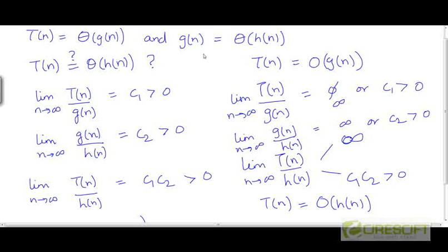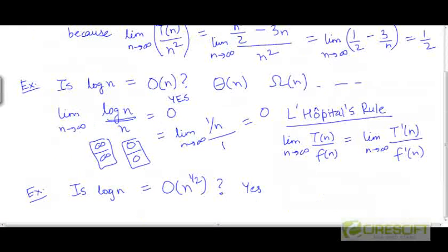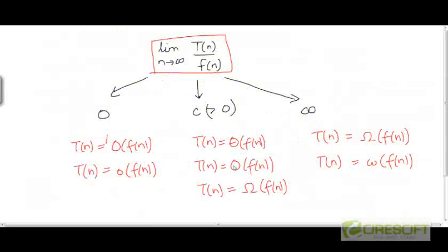If t is Ω(g) and g is Ω(h), then t is Ω(h). Just to remind you, t is Ω(f) in two ways: either t has the same rate of growth as f — meaning their ratio tends to some positive finite constant — or their ratio tends to infinity, in which case t has a larger rate of growth than f.